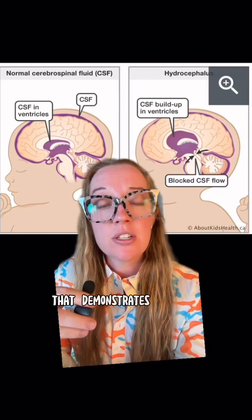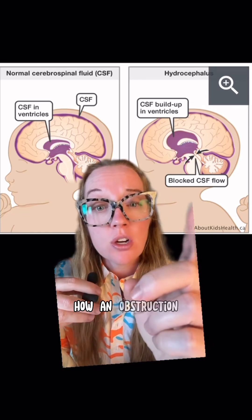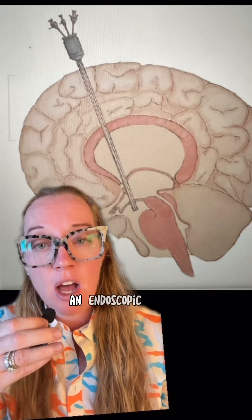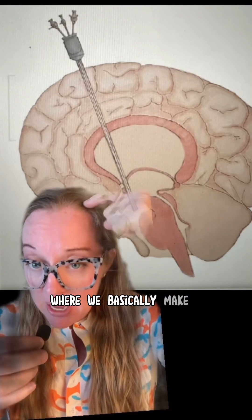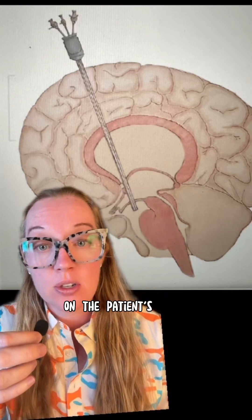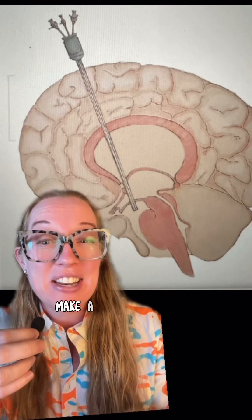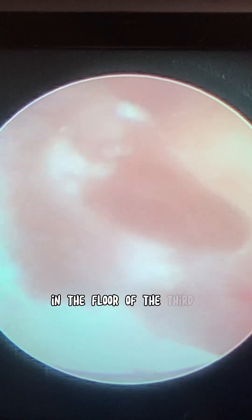Options to treat the hydrocephalus include endoscopic third ventriculostomy or ventriculoperitoneal shunting — both options divert the flow of spinal fluid and alleviate pressure on the brain. I elected to perform an endoscopic third ventriculostomy, where we make a small incision on the patient's skull and place an endoscope into the floor of the third ventricle of the brain, creating a diversion of fluid in front of the brain stem.